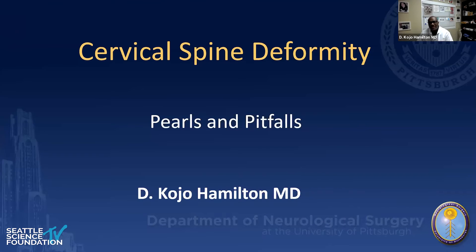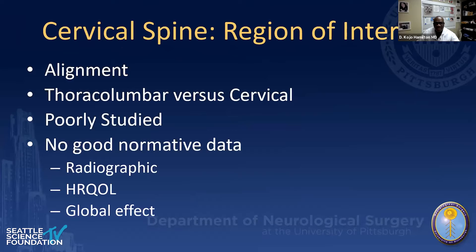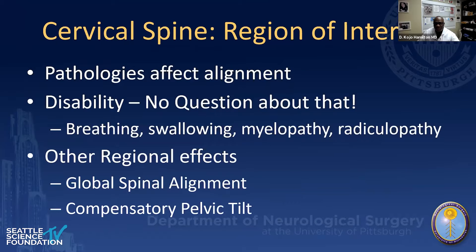Today I wanted to talk about cervical spine deformity — some pearls and pitfalls. But I always want to start with the alignment perspective. When we're in a joint course with orthopedic residents and fellows, as well as neurosurgery residents and fellows, I always want to talk about the alignment perspective of the cervical spine. With the increase in cervical spine surgery, this seems to be an issue, and the reason is there isn't very good normative data about the radiographic HRQLs associated with spinal deformity, and also an understanding of the global effect of what we do in the cervical spine.